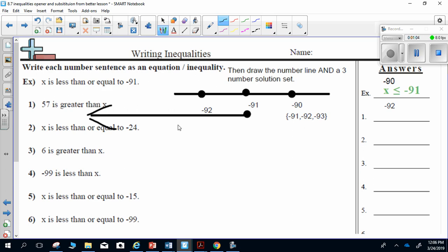The last thing you have to do is write your solution set. So negative 91, negative 92, negative 93, etc.